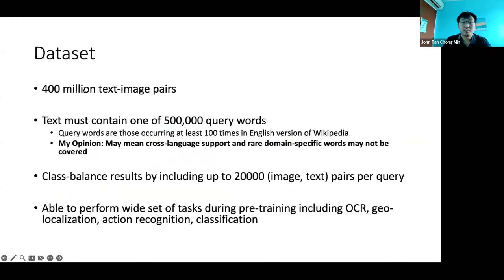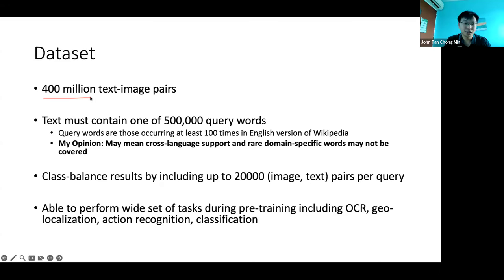What is the dataset for CLIP? 400 million text-image pairs. Unless you're OpenAI, you won't have access to web-scale data like that. They already sanitized the data — initially they probably had billions of text-image pairs, but took away those that don't match well. I'm emphasizing how they created the dataset because if you want to use CLIP, you should make sure your images and text match how they created the dataset — in-distribution data always performs better.